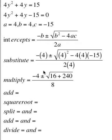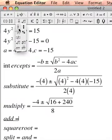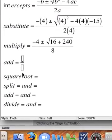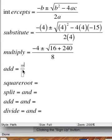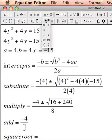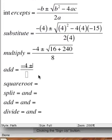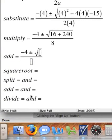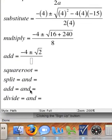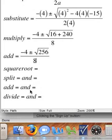Now the next step is I'm going to add. And when I add, let's bring another fraction in here. I'm going to add what's inside the square root to my numerator. So negative 4 is going to stay the same. I'm going to add and subtract the square root of 16 plus 240 is 256, and the denominator of 8 is going to stay the same.